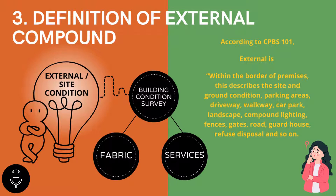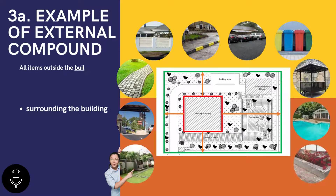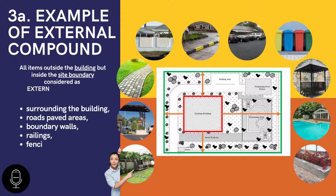The external area also includes fences, gates, road, guard house, refuse disposal, and so on. Here is an example of the external compound area of the building. External works describe all items outside the building but still inside the site boundary, including parking area, loading and unloading area, trash area, roadways, sidewalks, walkway, parkway, driveway, landscape area, paved area, boundary walls, railing, fencing, and soft areas.